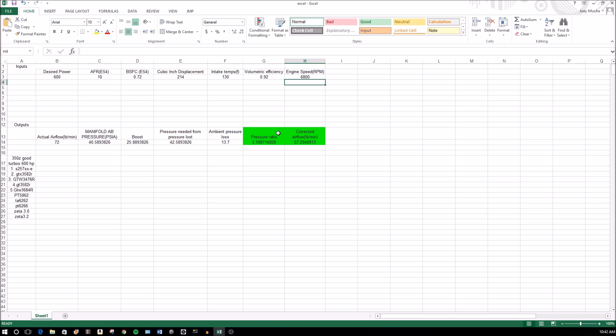If you change this, you see this changes. This is going to be your end result here, but this is your output. So this is your actual airflow, your manifold pressure, boost pressure needed from pressure loss, ambient pressure with its loss, and here's your final pressure ratio.